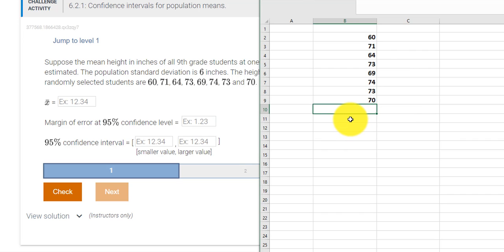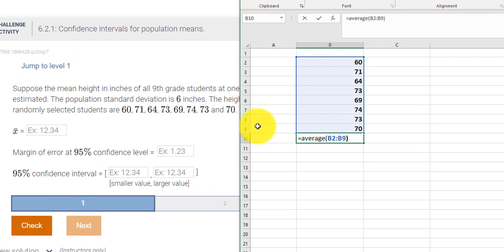To get the average, I just type in equals AVERAGE and then highlight my data. We're going from B-2 to B-9. I press enter.